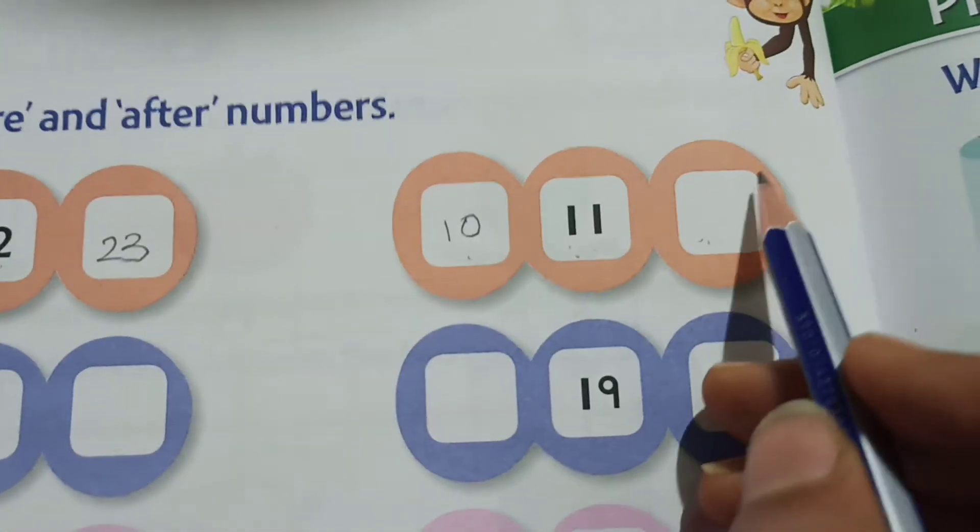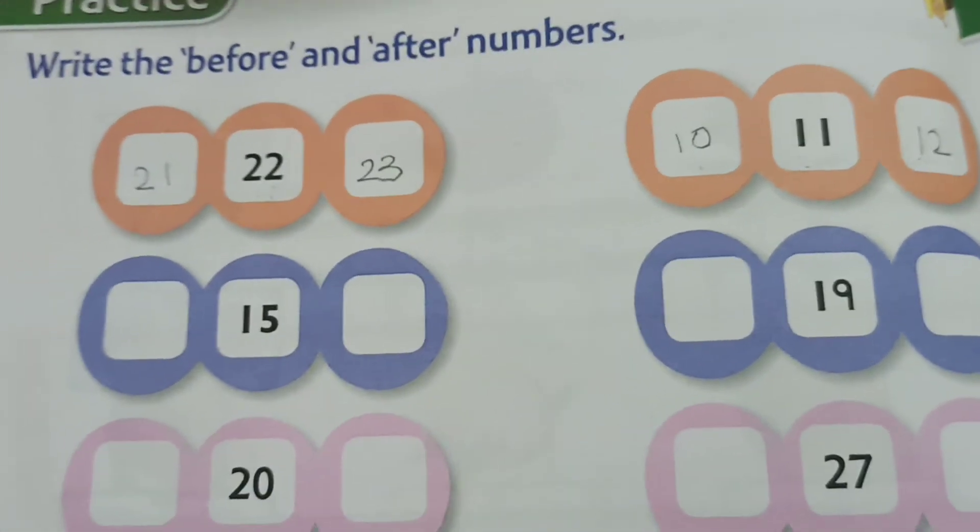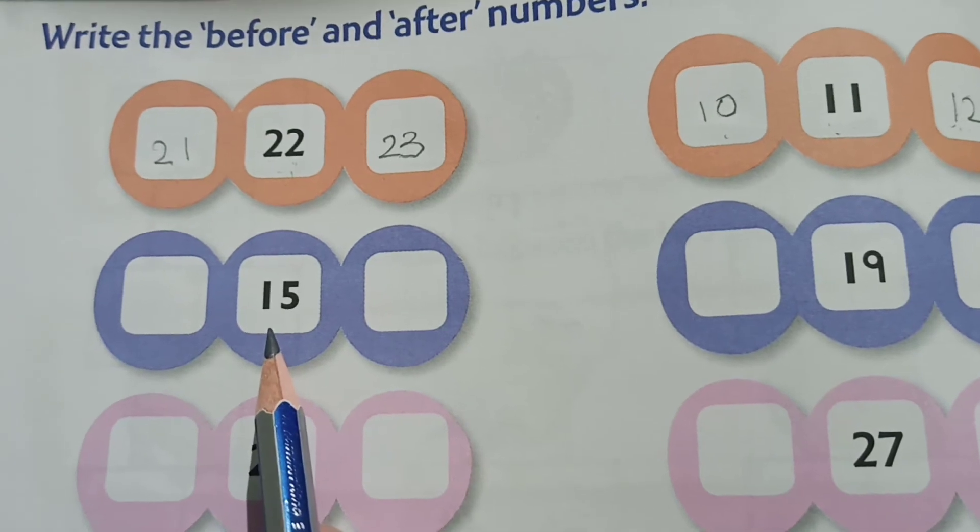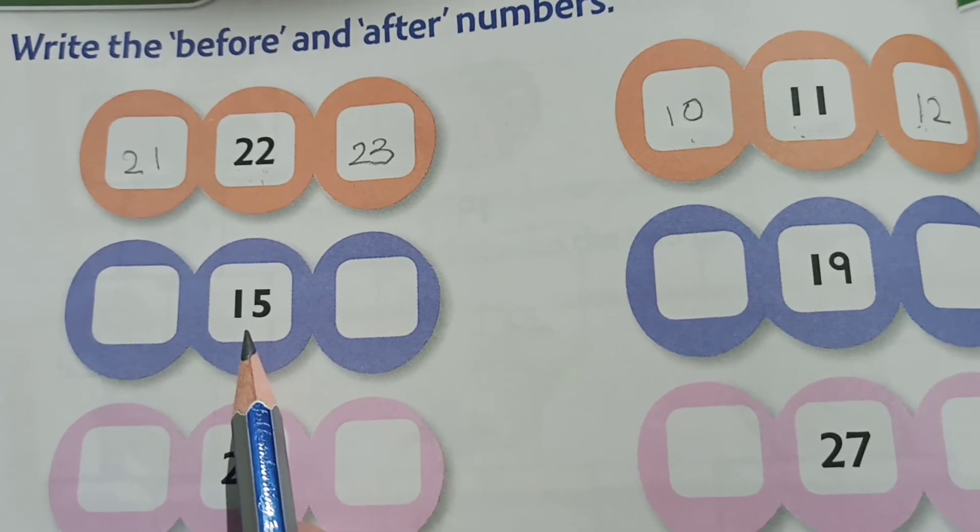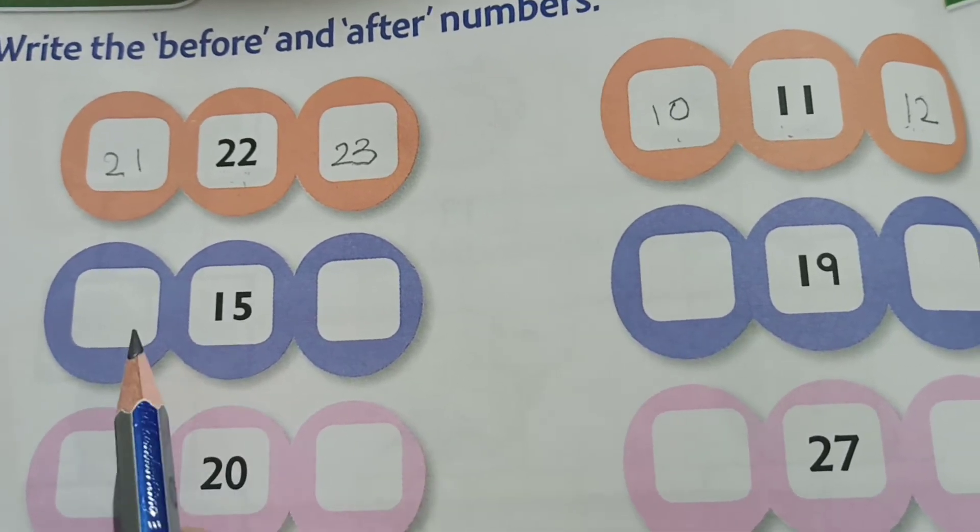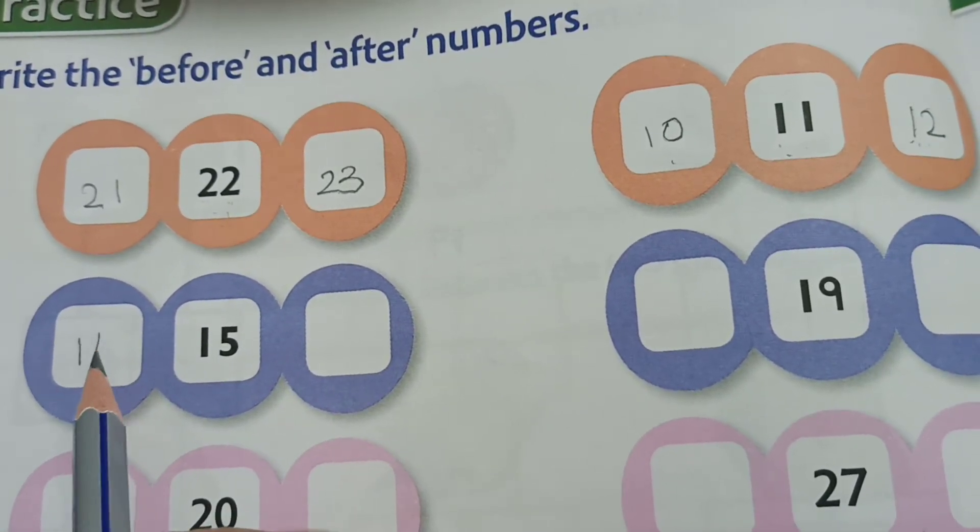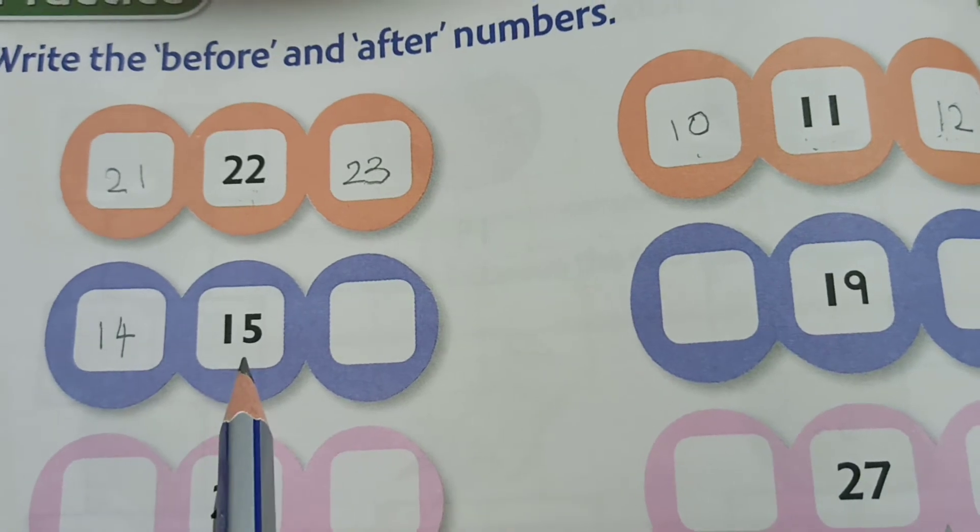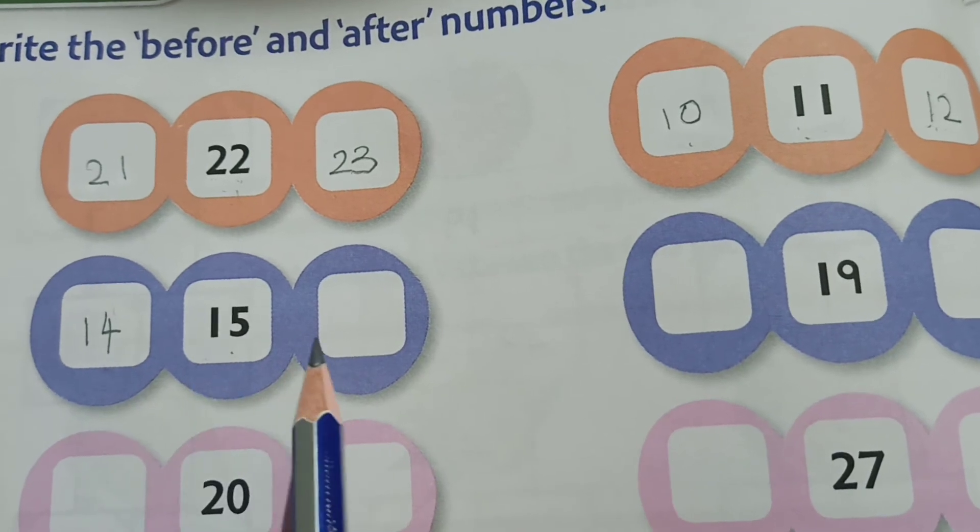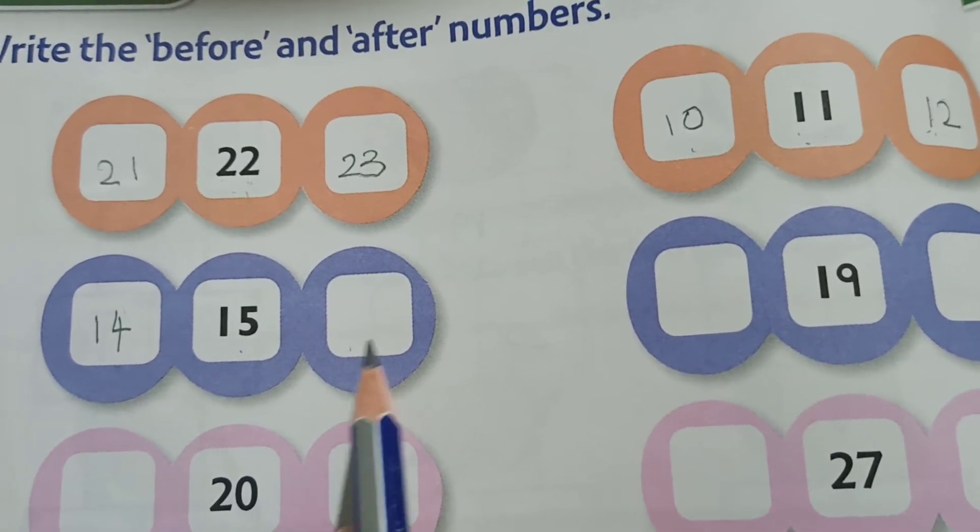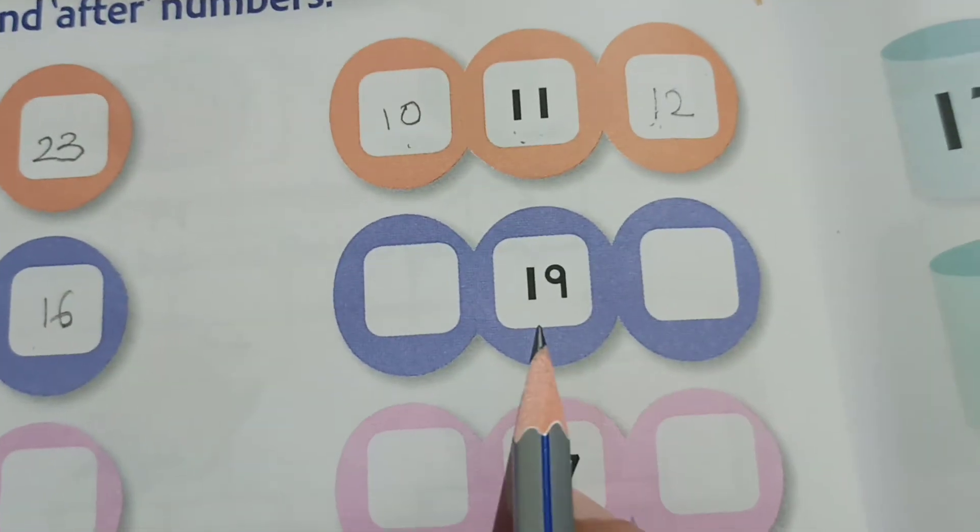Before eleven comes ten. So ten, eleven. And here will come ten, eleven. The next number after eleven is twelve. So this is the next number, that is twelve. Now here it is fifteen. What is the number before fifteen? Before fifteen is fourteen.